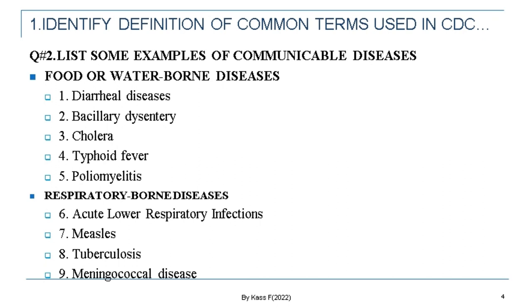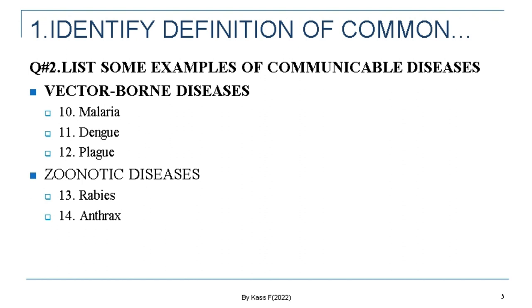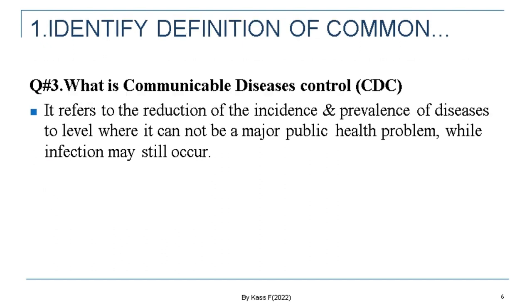Under vector-borne diseases, we have malaria, dengue fever, and black fever. And under zoonotic disease, we have rabies and anthrax. These are some of the commonly known communicable diseases. CDC refers to the reduction of incidence and prevalence of disease to a level where it can't be a major problem, while infection may still occur.